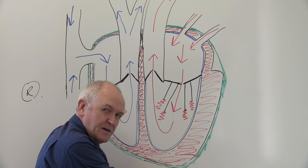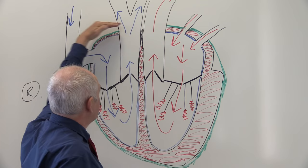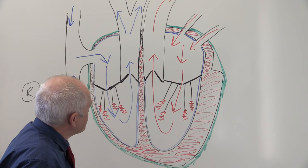This bit of the heart at the bottom where it goes pointed - confusingly, that's called the apex. So the apex is at the bottom, and this bit here is the base of the heart. The base is flatter and the apex is more pointed.